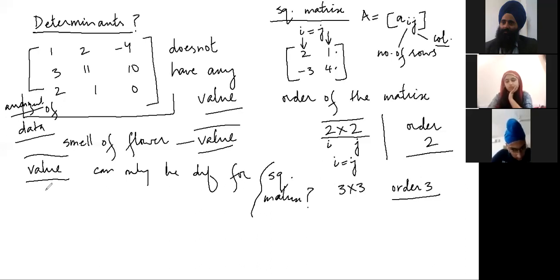Determinant is a value and determinant can only be defined for square matrix. So, what will be the determinant of this matrix? Now, my question is, is this a square matrix? Yes. Yes. For the square matrix? Yes, sir.